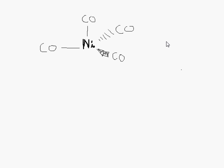Hey everybody, so for this video I'm going to do a group theory problem — we're actually going to apply all of the point group stuff we just went over. What we have here is a trigonal pyramidal nickel tetracarbonyl complex. For this we're just going to say it's trigonal pyramidal, and I'm going to break the suspense and tell you this is the C3V point group. I chose C3V because the table is very small and it'll be easy to go through quickly, because sometimes with a big table these problems can take up to an hour.